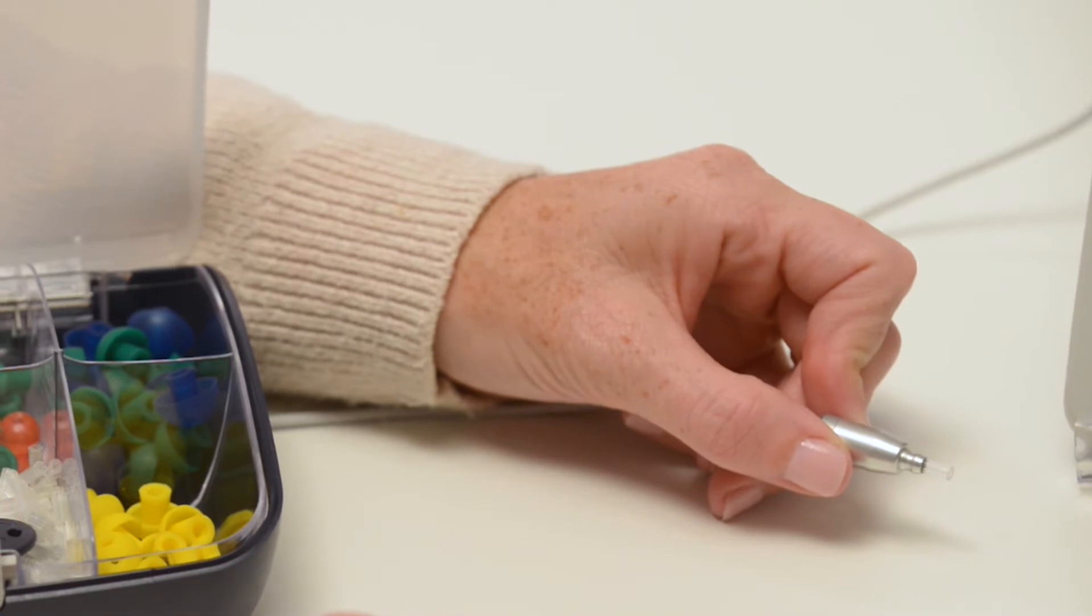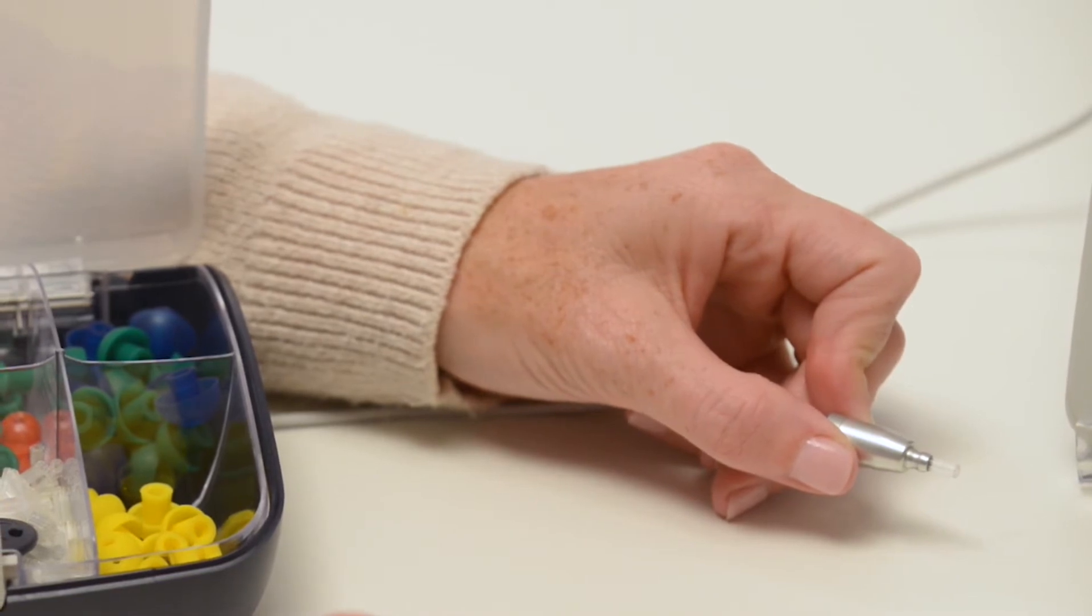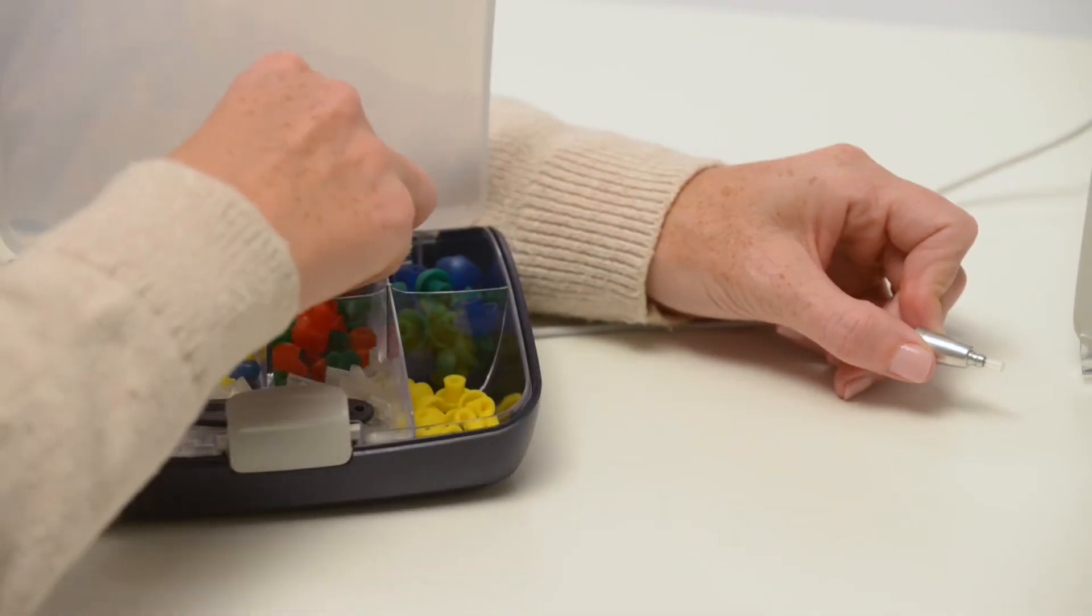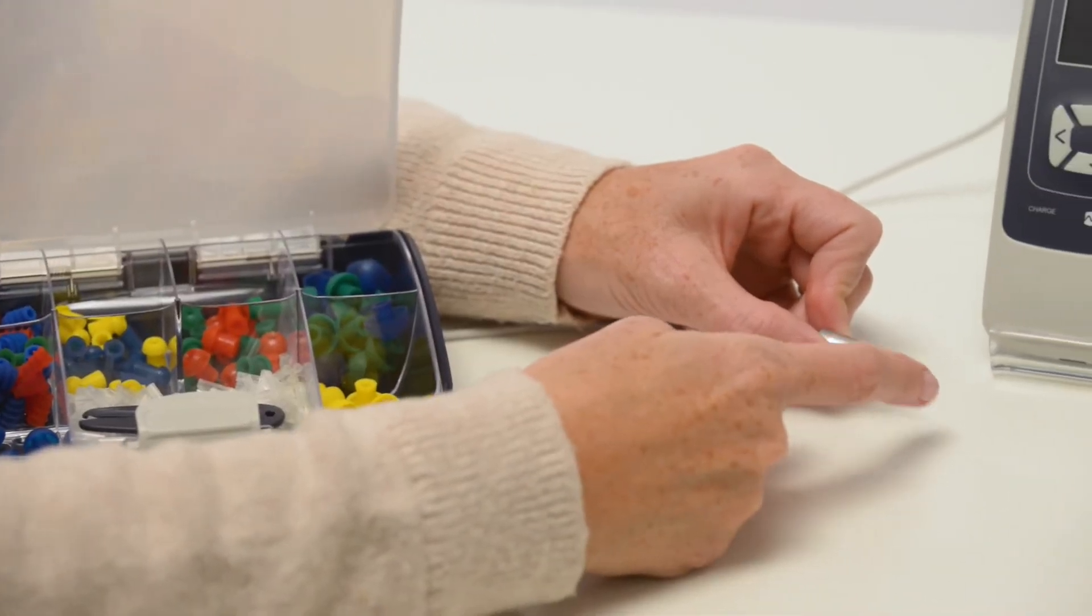Inspect the probe tip between patients to ensure it is clean and free of debris. If there is an obstruction, replace the probe tube. An occluded probe will impact test results.